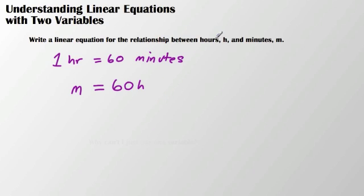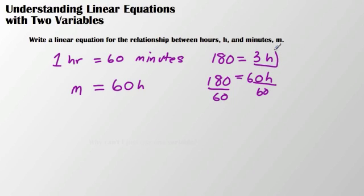There's the relationship between hours and minutes because maybe I could use this equation over and over. Maybe I don't know how many hours are in 180 minutes. Well, I can go ahead and plug that into my equation. I would say 180 equals 60h divided by 60. I would see that 180 minutes equals 3 hours. So that's how writing a linear equation for a relationship could certainly help you.